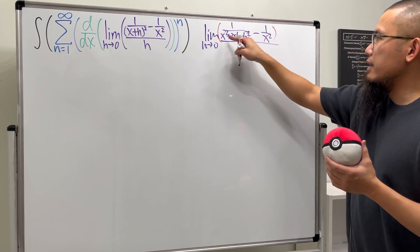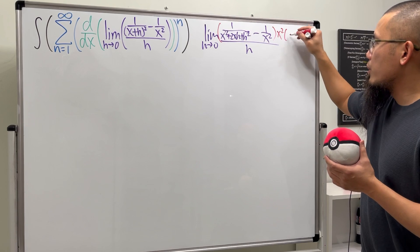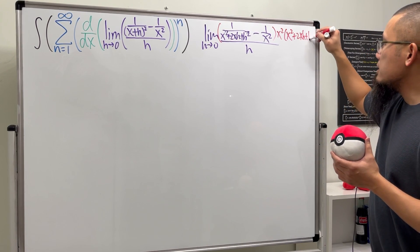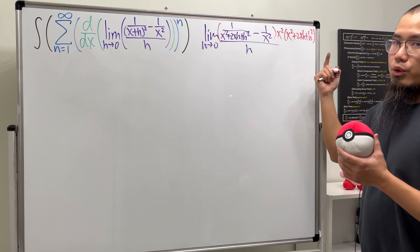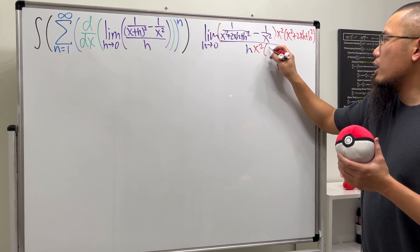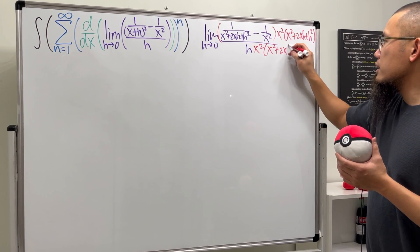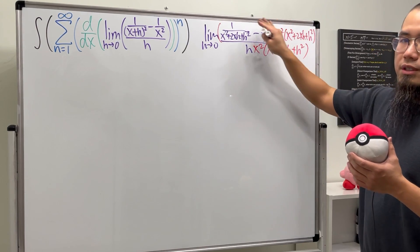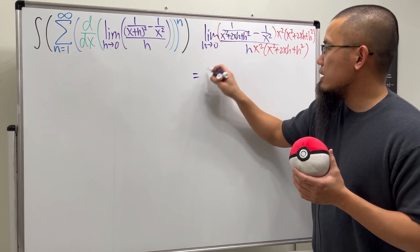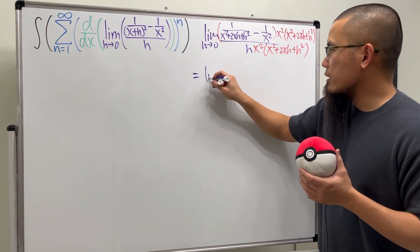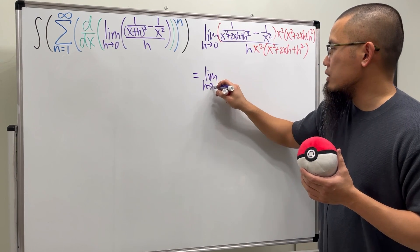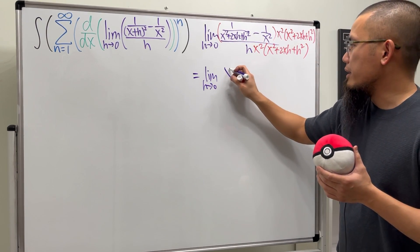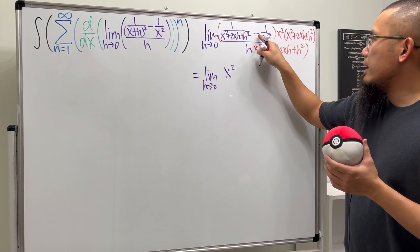I'm going to multiply the top and bottom by x squared and (x squared plus 2xh plus h squared). So here we have x squared times (x squared plus 2xh plus h squared) on both top and bottom. Then we distribute. Again, taking the limit as h approaches zero: this and that will cancel and we'll just have x squared on one part.